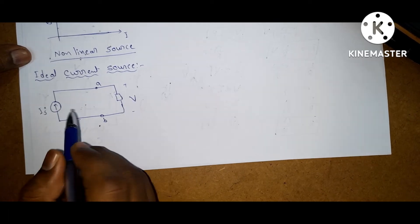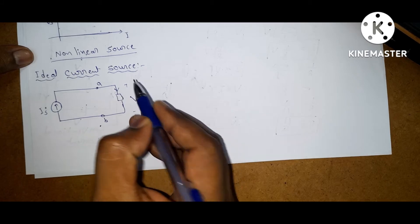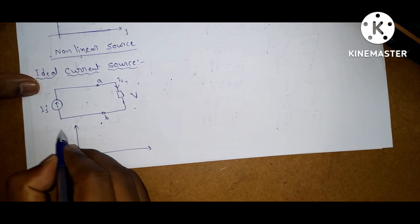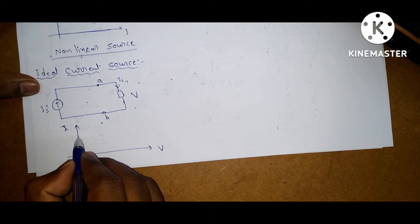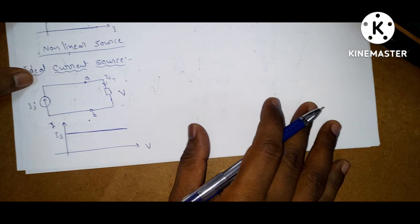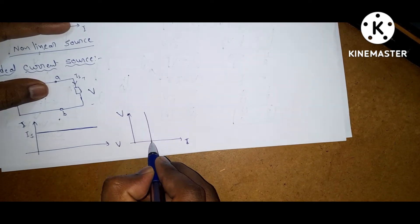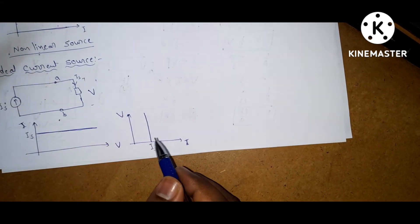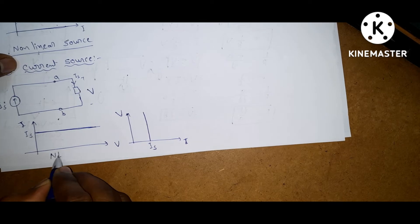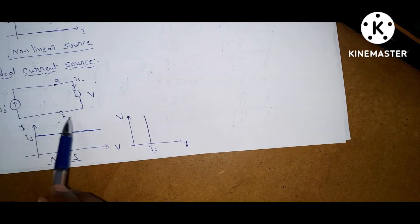For an ideal current source, for all values of voltage across it, the current through the terminal is constant. If you draw the graph between current and voltage, increasing or decreasing the voltage keeps the current always constant. The characteristics are also non-linear in nature, so all ideal current sources are non-linear current sources.